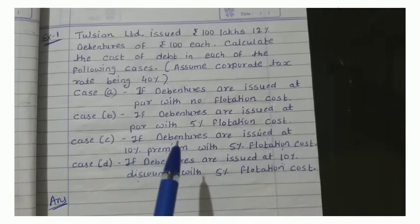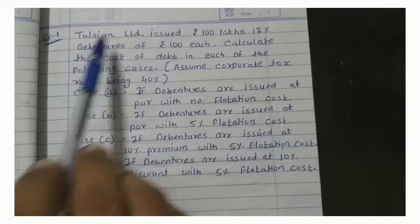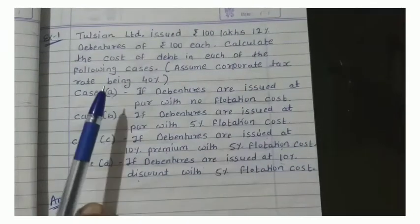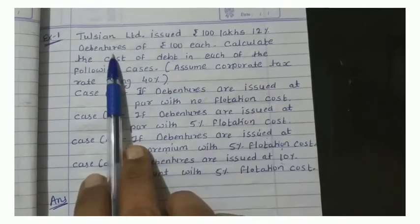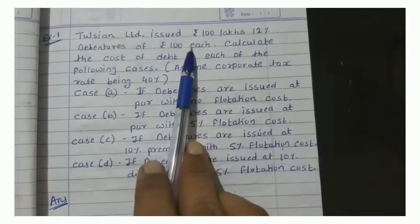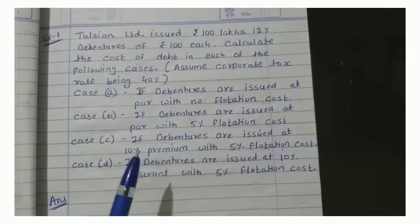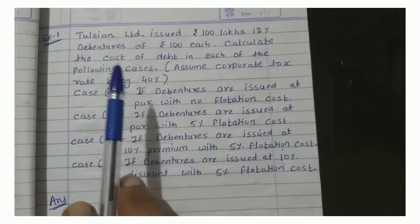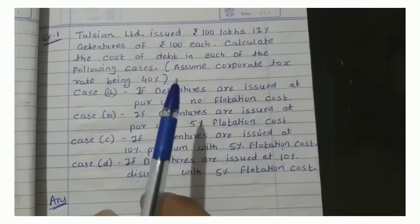Based on this information, what type of bond is this? 100 lakhs is given, 12% debenture is given, Rs. 100 is given — but number of years is not given. So such type of debenture is irredeemable debenture.